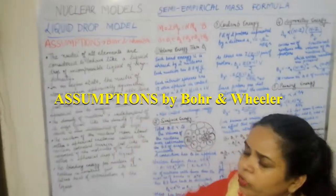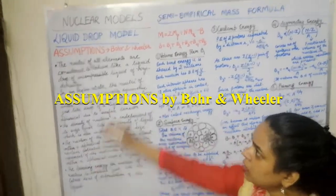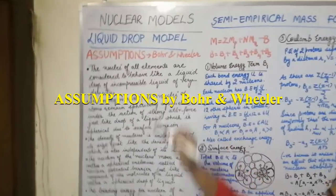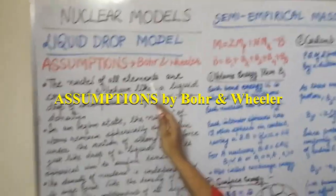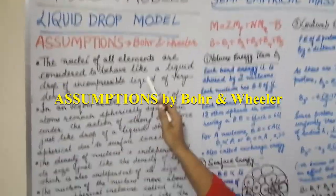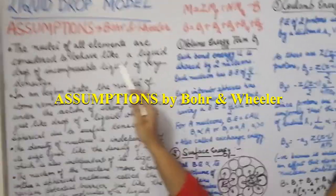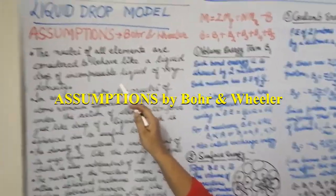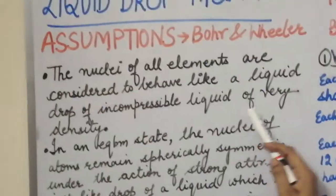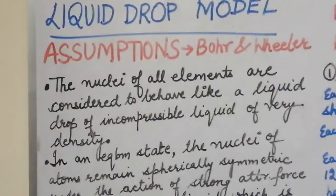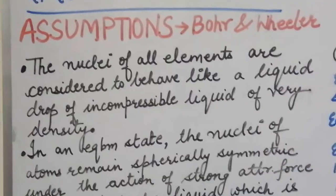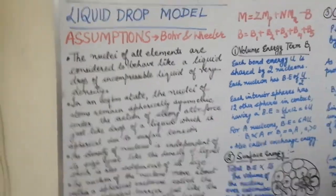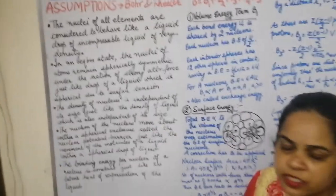The first assumption of the liquid drop model: Bohr and Wheeler stated that the nuclei of all elements are considered to behave like a liquid drop which is incompressible and has very high density. We already know that the density of the nucleus is 10 to the power 17 kilograms per meter cubed — a very high density.